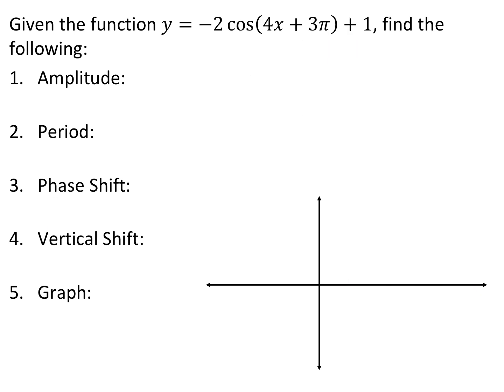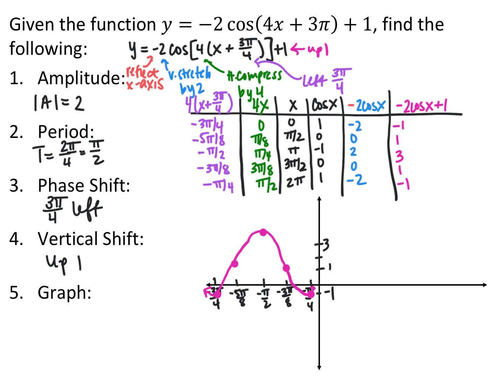For the function y = -2cos(4x + 3π) + 1, first factor out the 4 in front of x: y = -2cos[4(x + 3π/4)] + 1. This gives a reflection across the x-axis, vertical stretch by 2, horizontal compression by 4, shift left 3π/4, and up 1. The amplitude is 2, the period is 2π/4 = π/2, the phase shift is 3π/4 to the left, and the vertical shift is up 1.